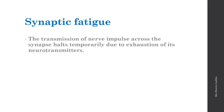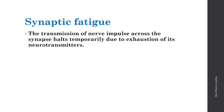Synaptic fatigue: the transmission of nerve impulse across the synapse halts temporarily — for a few seconds — if there is exhaustion of neurotransmitters. If neurotransmitters are not produced at the required rate, the nerve impulse will stop for some time, taking a temporary halt until neurotransmitters are again produced. This is called synaptic fatigue. Just like tiredness causes a person to take a break, exhausted neurotransmitters cause the synapse to halt for milliseconds. It is temporary.